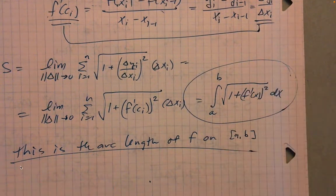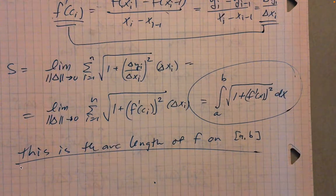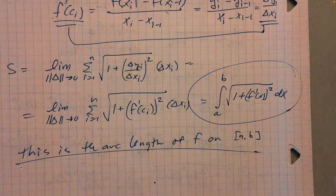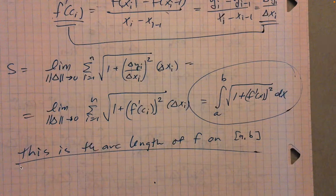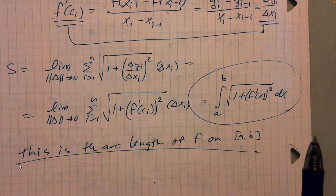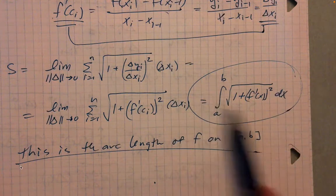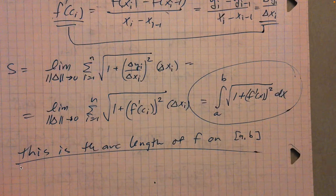This is the arc length of f on [a, b]. This is the formula. I love these integration applications because they're all based on pre-calculus formulas we've seen many times. We've all seen the distance formula lots of times. Previously with the disk method, we used the volume of a cylinder. Here, based on this simple formula from algebra, we can spin up this amazing integral that tells us the length of an arbitrary curve between two endpoints.